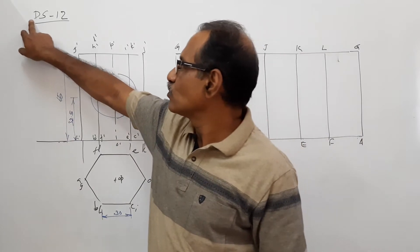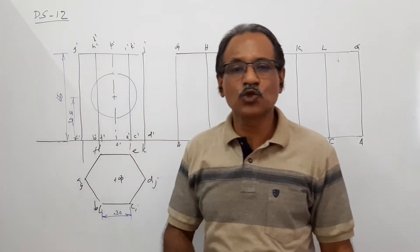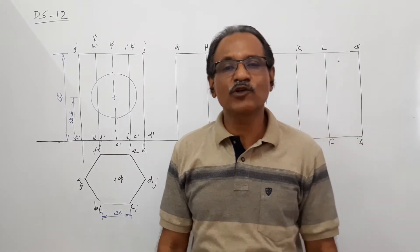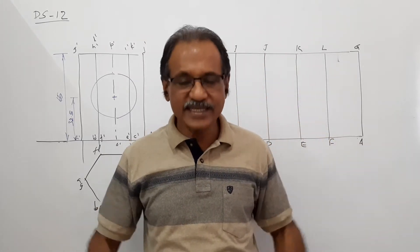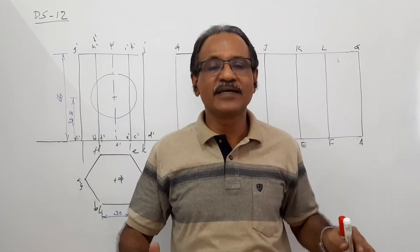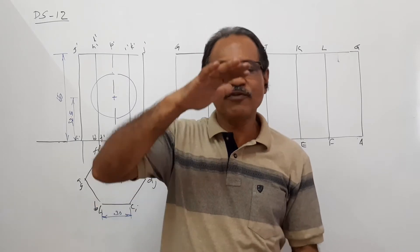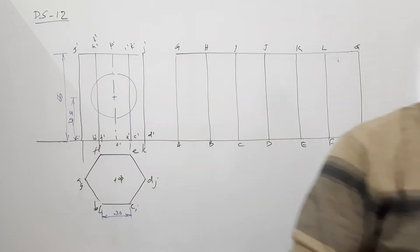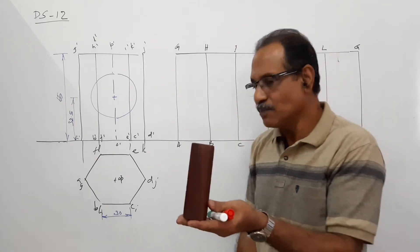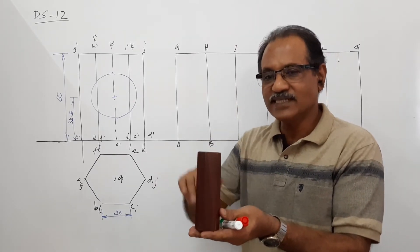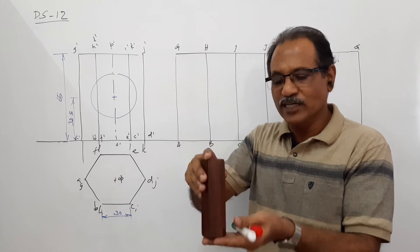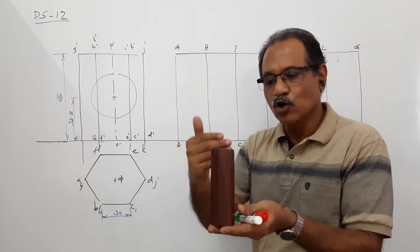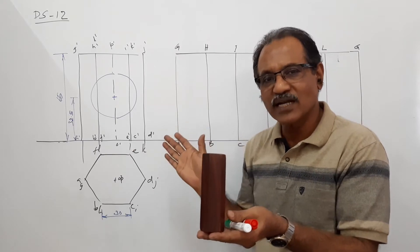In this video, Development of Surfaces 12, we discuss a problem that has come for QSAT. It is a hexagonal prism with 30mm side and 65mm axis, standing on its base on HP with two base sides parallel to PP.